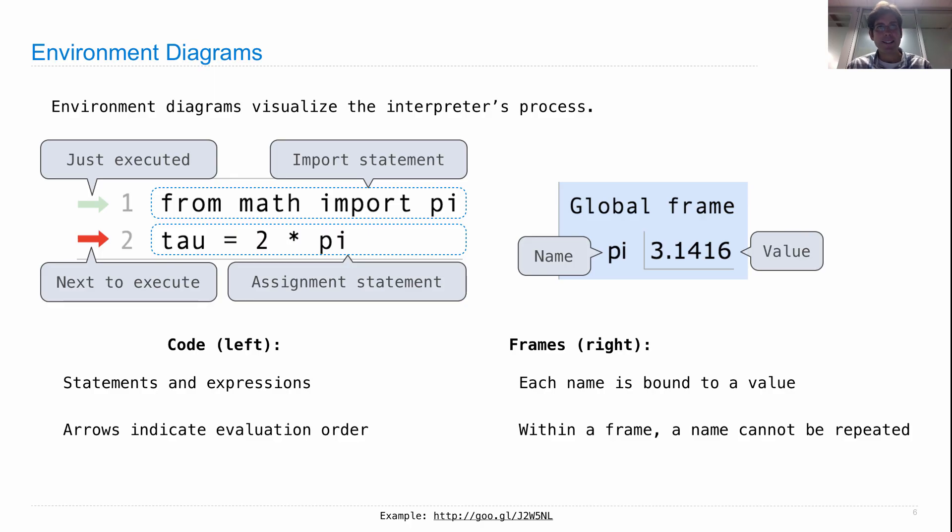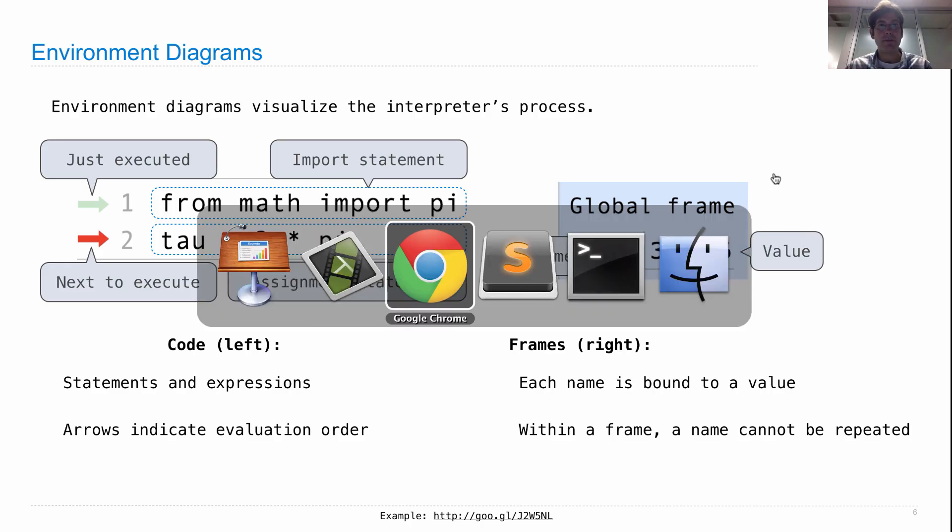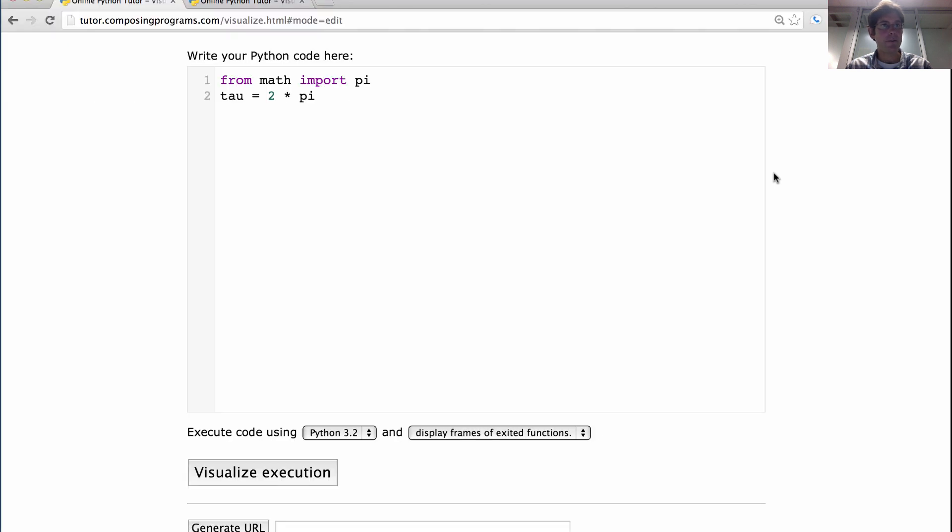Because when there are lots of names repeated in various ways, we'll need to be able to keep track of what they really mean. These things get drawn for you automatically. Here's the web interface to what's called the online Python tutor. Here's the code that we type in, from math import pi. You can edit this. And then you click visualize execution.